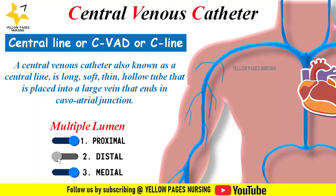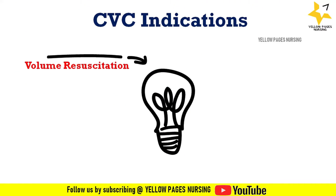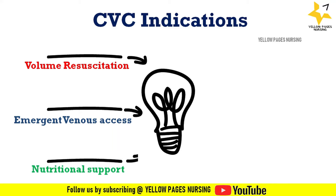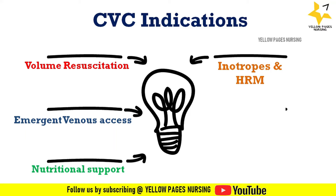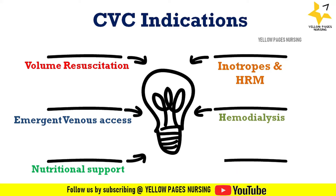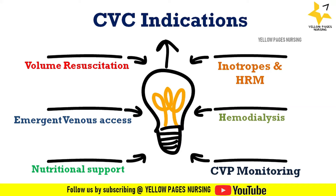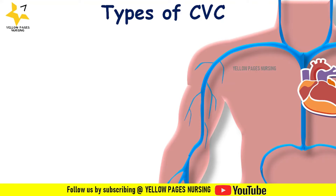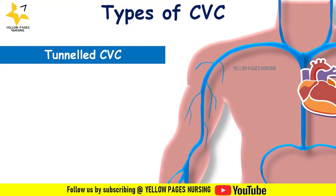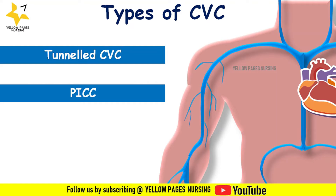Central line is indicated in cases of volume resuscitation, emergent venous access, nutritional support such as TPN administration, inotropes and high-risk medications, chemotherapeutic drug administration, hemodialysis, and CVP monitoring. Types of CVCs include tunneled central venous catheter, peripherally inserted central catheter (PICC), and subcutaneous port or implantable port.